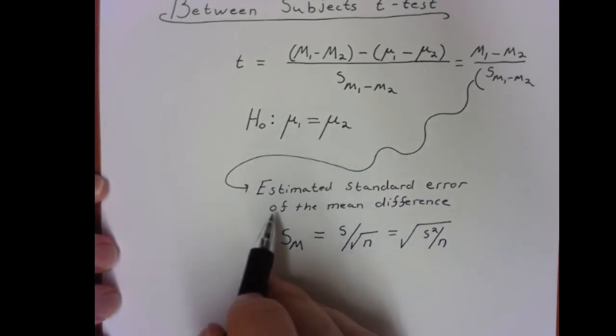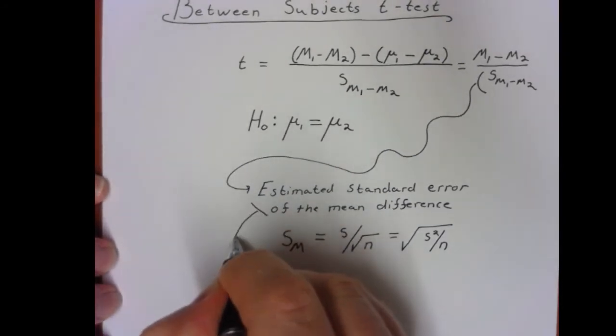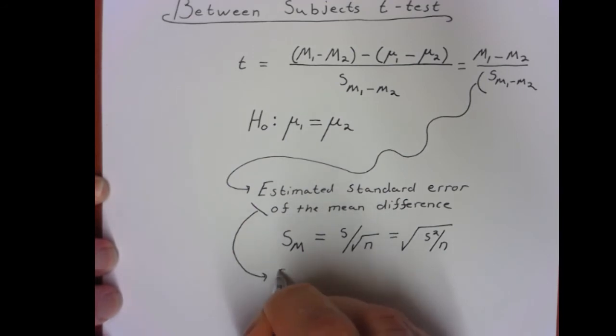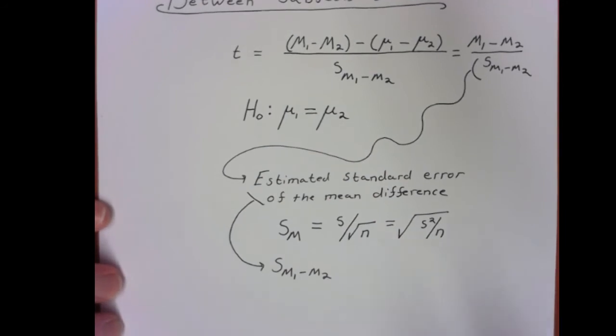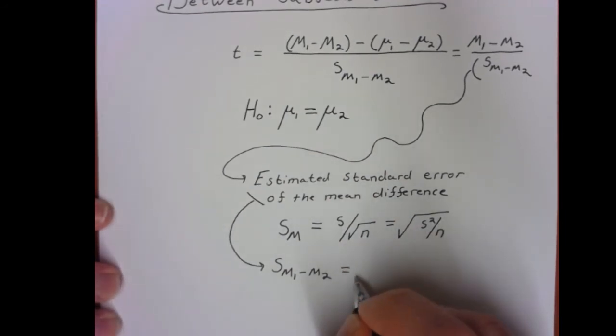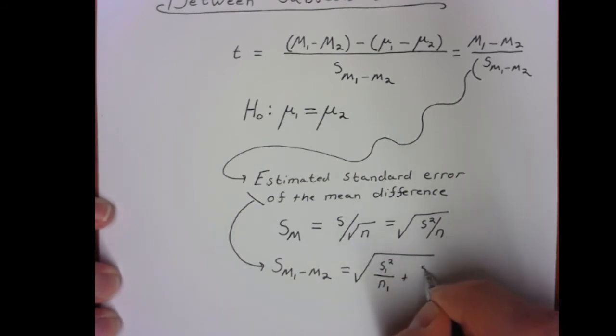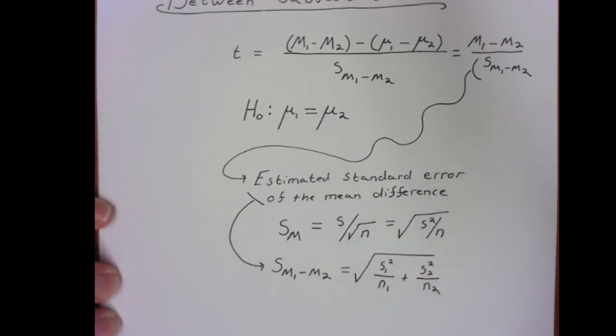Now, let's look at this estimated standard error of the mean difference a little bit more. What we really have here is the square root of the variance of sample one divided by sample one's sample size plus the variance of sample two divided by sample two's sample size.